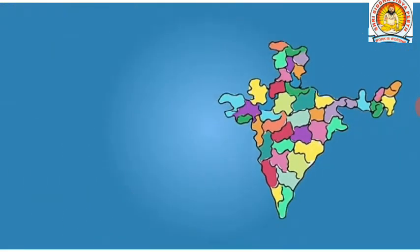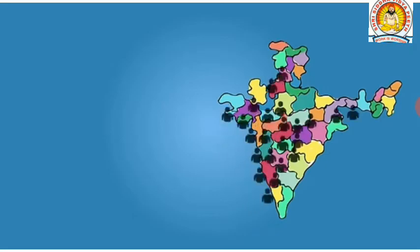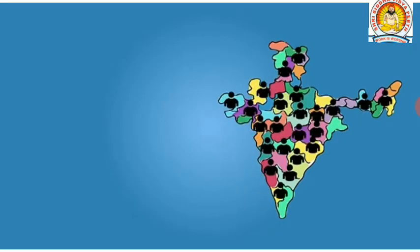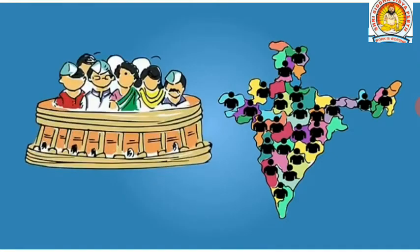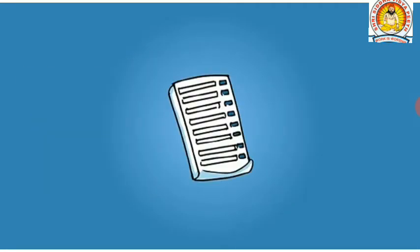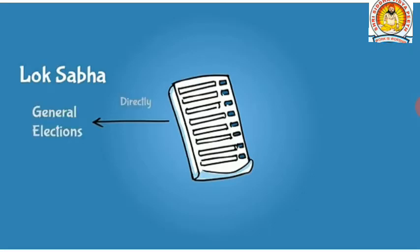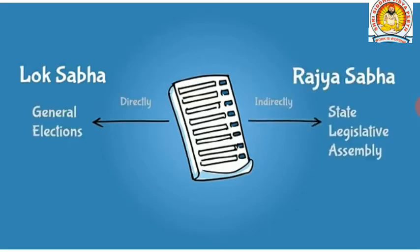Each of these constituencies elects one person to the parliament. Once these candidates become part of the parliament, they become Members of Parliament. We elect the members of the Lok Sabha directly through general elections, and the members of the Rajya Sabha indirectly through state legislative assemblies.